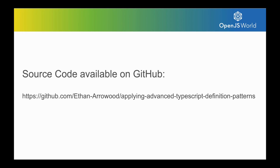We're going to be doing this through a sort of code walkthrough. We're going to be building these type patterns from scratch over a simplified implementation of Fastify. You can check out the source code on GitHub. I'll have a master branch which will have all the completed code, as well as an initial branch that'll have the starting point, if you'd like to follow along as well.